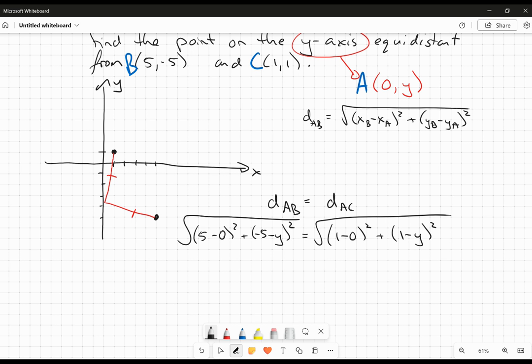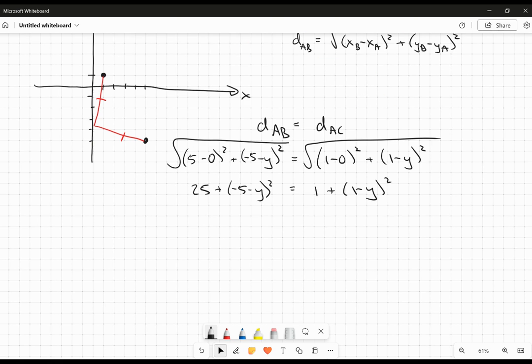Now, some things we can do to make our lives easy right away. First of all, we can square both sides of the equation, and all that's going to do is get rid of the square roots. But that's a step in the right direction. And then 5 minus 0 is 5. Squared will be 25. Over here, 1 minus 0 is 1. Squared is 1. And so, I've gotten rid of the easy little steps here.